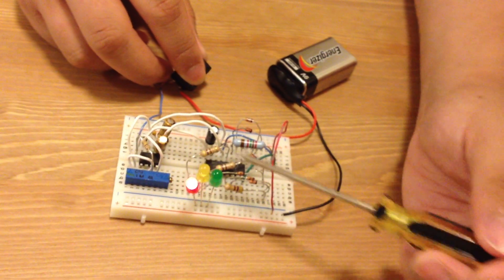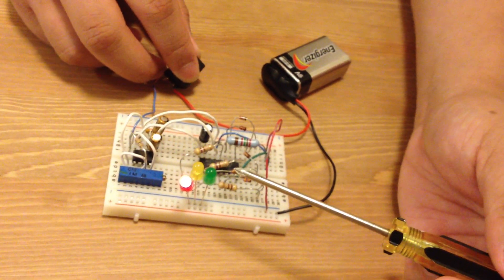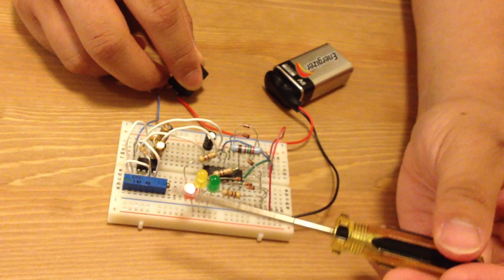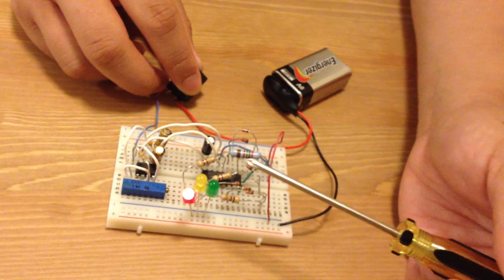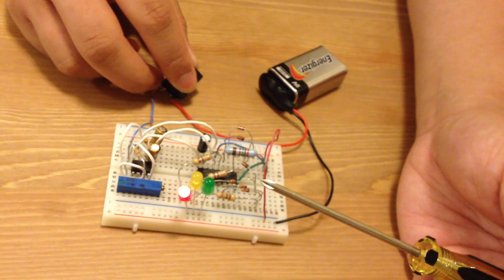As you can see, the cycle length is quite obviously longer than the previous ones because I increased the resistance in the pot.